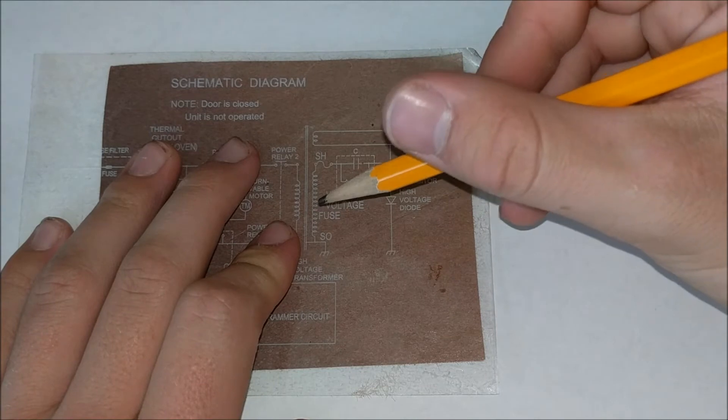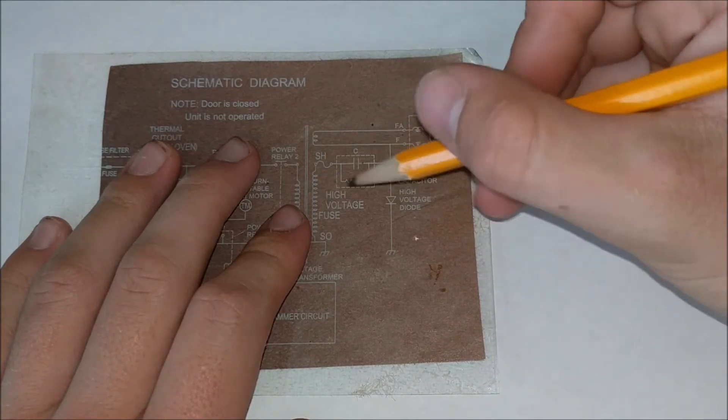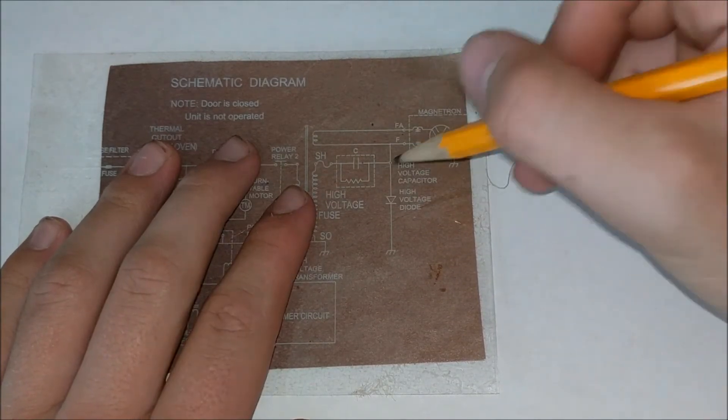So now we have about 4,000 to 5,000 volts DC on this point and this point, and we have about 6.3 volts AC or maybe a little bit less on these two points. And so those two voltages are what's going to be driving the magnetron. The capacitor, the transformer, and the diode are just there to make those two voltages, the power supply.